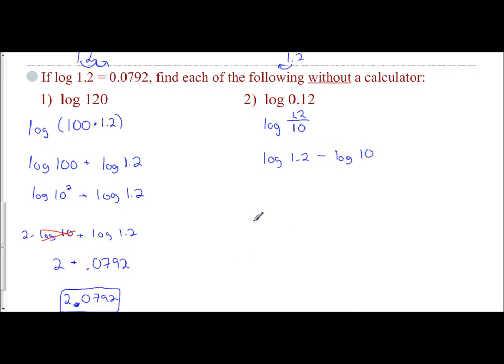Log of 1.2 is 0.0792, and log of 10 is 1. So 0.0792 minus 1 is negative 0.9208, and that is our value.